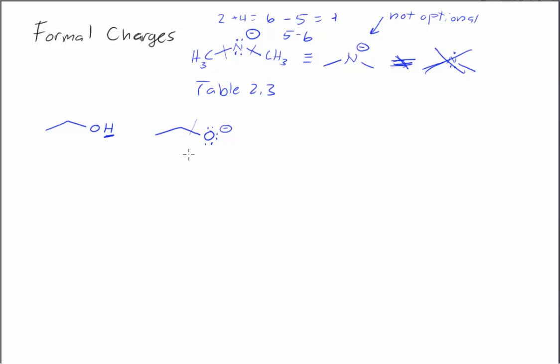If we do our electron count, half of each bond is 1. And then you see that we have 6 electrons in lone pairs, so that is 7. So the 6 electron valence count minus the 7 electrons we just counted gives us a negative 1 charge, and that's what I have right here.